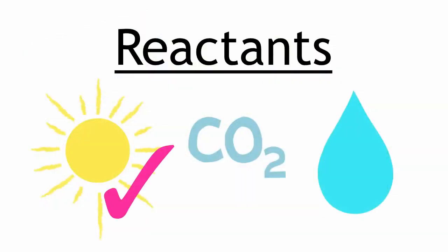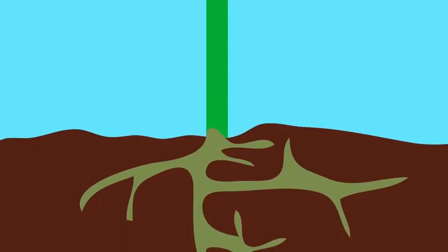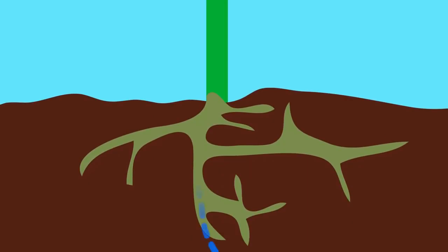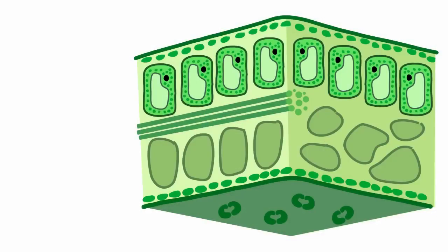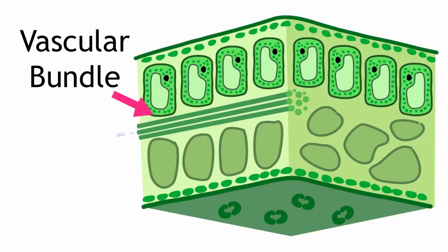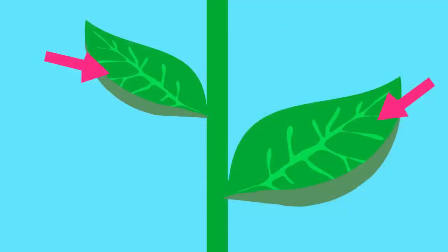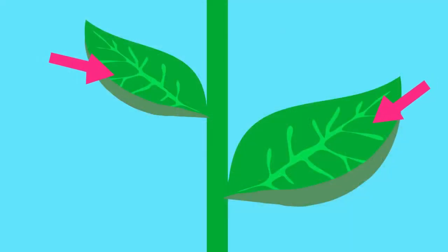So we've got sunlight and carbon dioxide now. What's left? Water. Water comes up through the roots and stem and enters the leaf through a vascular bundle, which contains a hollow tube for water transport called the xylem. Look at how the vascular bundle spreads out in the leaf to form veins so that it can spread water throughout.